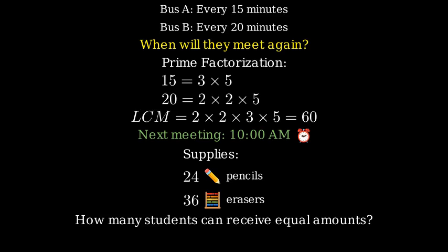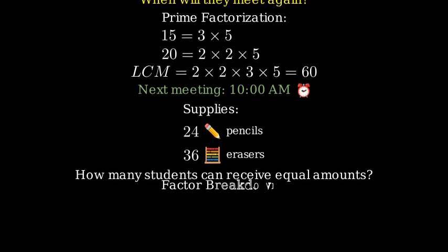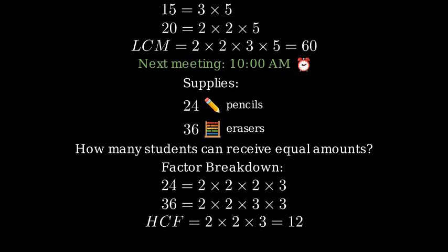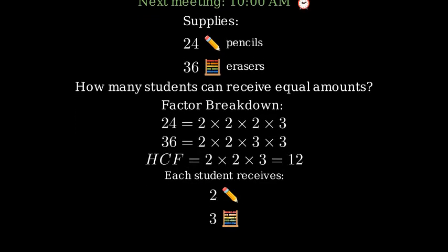To solve this, we need to find the HCF of 24 and 36. Let's find their factors. 24 equals 2 times 2 times 2 times 3. 36 equals 2 times 2 times 3 times 3. This means 12 students can each receive two pencils and three erasers.